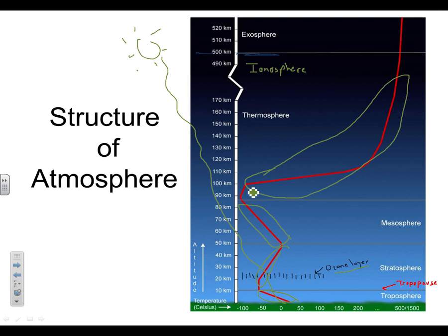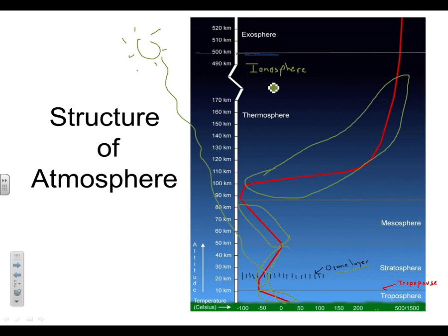The thermosphere does get hotter again because it's the first time any radiation from the sun is hitting anything. Radiation travels through space, which is a vacuum. When it finally reaches the Earth, even though air particles are spread far apart, those air molecules absorb some of the sunlight, and that makes it hotter.